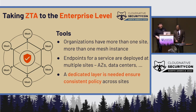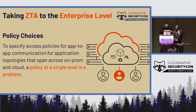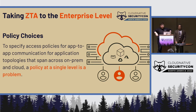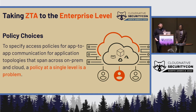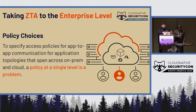That super control plane lets us enforce consistent identity for services across different sites and author a single policy — for example, that the front-end can call the back-end — and manifest that across the infrastructure. The same policy you write applies equally regardless of whether services live next to each other on the same host, or are traversing a DMZ and going through a firewall to reach back to a data center.